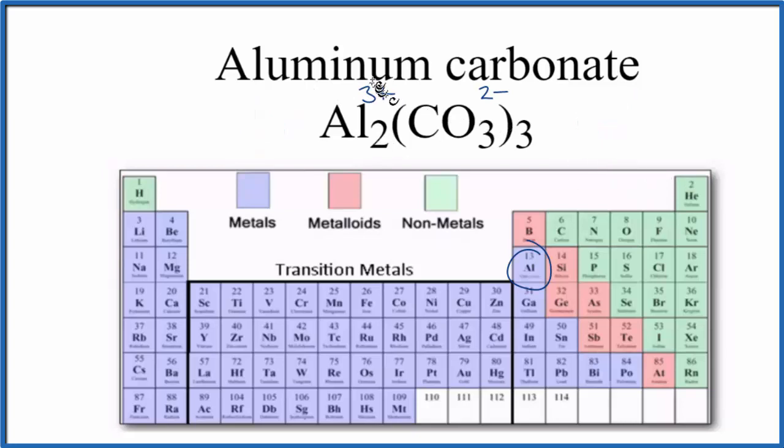When we look at this, we have positive ions and negative ions. Those ions are attracted because they're opposite charges. That forms the ionic bond.